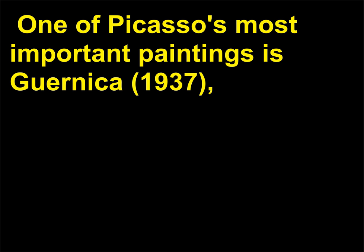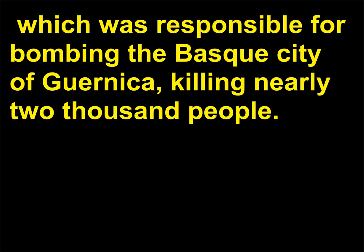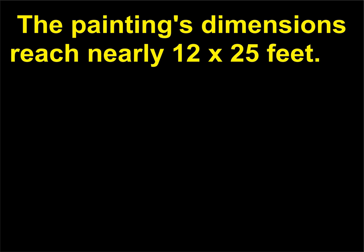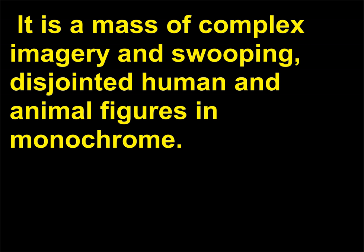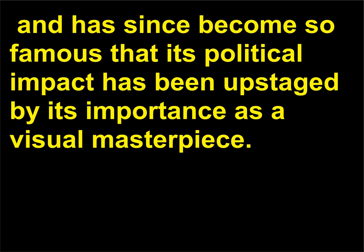One of Picasso's most important paintings is Guernica (1937), a monumental work inspired by atrocities committed by Spain's far-right political party, the Falange, which was responsible for bombing the Basque city of Guernica, killing nearly 2,000 people. The painting's dimensions reach nearly 12 by 25 feet — a mass of complex imagery and swooping, disjointed human and animal figures in monochrome. Guernica was exhibited at the Exposition Universelle (World's Fair) in Paris in 1937, and has since become so famous that its political impact has been upstaged by its importance as a visual masterpiece.